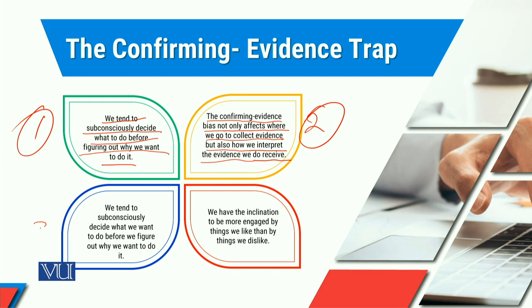The third aspect is again about the fact that we tend to subconsciously decide what we want to do before we figure out why we want to do it. This means that we don't have elaboration, reason, logic, or explanation. So when we don't have reason, logic, and explanation, we lose track of the evidence and its concreteness, and we cannot understand why we want to incorporate that decision.